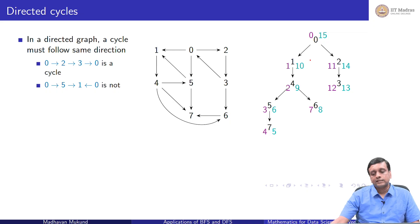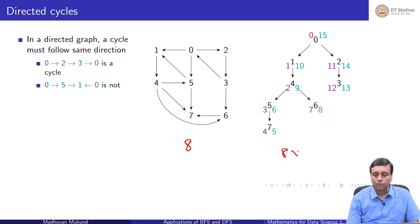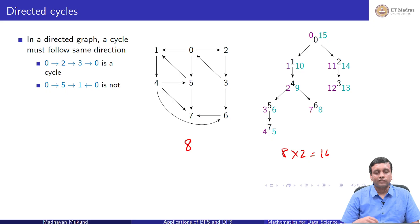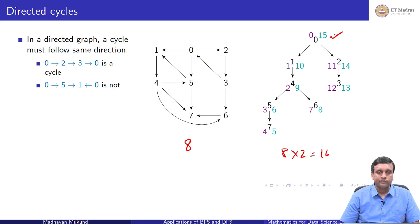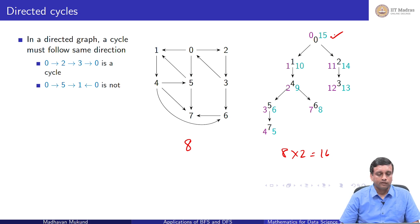As a sanity check: there are 8 vertices, so there should be 8 × 2 = 16 numbers, since we enter and exit each vertex. Starting at 0, we must end with 15, and we indeed do. In general, if you start with a graph of n vertices and do a DFS, the last exit number should be 2n minus 1.